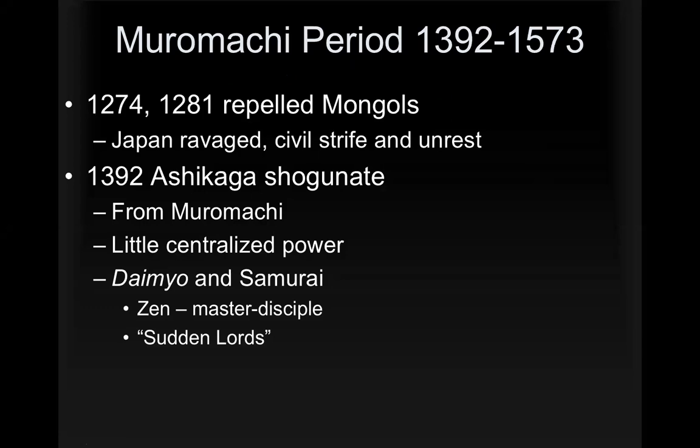The Muromachi period runs from the end of the 14th century until about 1573. In 1274 and 1281, the Japanese had repelled the Mongols. The Mongols had successfully conquered China and ruled the Yuan dynasty. During this time, Japan was ravaged by civil strife and unrest — as you might expect when foreigners are invading the island, people start to lose confidence in leadership.